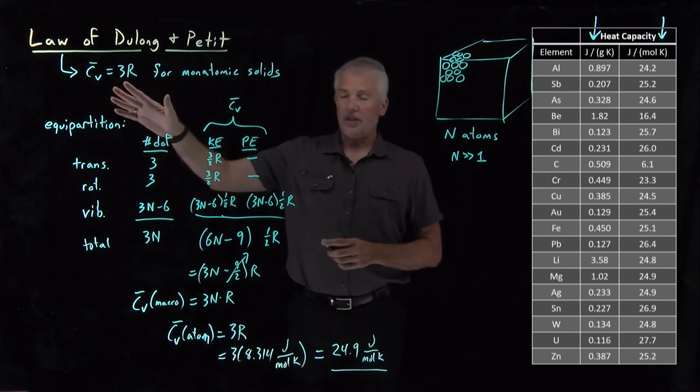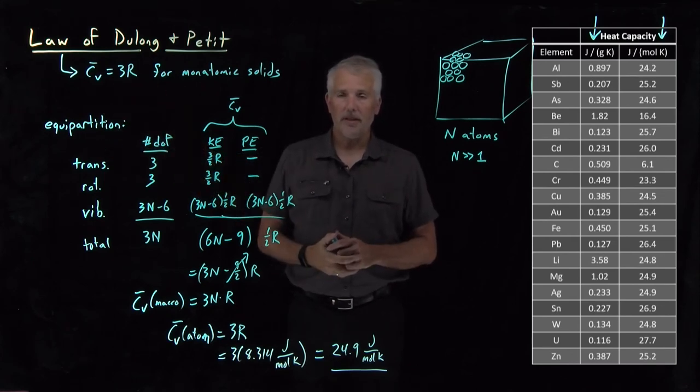So we have this, the equipartition theorem gives us this nice simple rule. We can predict, at least roughly, the heat capacity of many different solids.